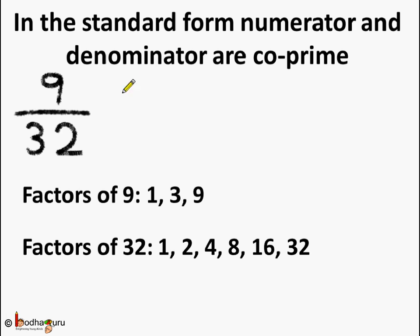You know, when 2 numbers have only 1 as the common factor, the numbers are said to be co-prime numbers. So in the standard form, the numerator and the denominator are co-prime — meaning they have only 1 common factor and that is 1.